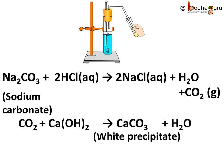The chemical reaction in the first test tube is represented as Na₂CO₃ (sodium carbonate) plus 2HCl gives 2NaCl plus H₂O plus CO₂. The produced carbon dioxide then reacts with lime water to give calcium carbonate and water. This is represented by the chemical equation: CO₂ plus Ca(OH)₂ gives CaCO₃ plus H₂O.